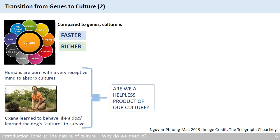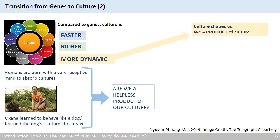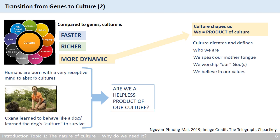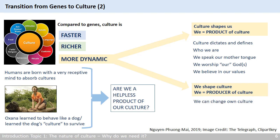Now, does that mean we are always the helpless product of our culture? Does that mean culture dictates and defines who we are, and we can actually do nothing about it? The answer is, fortunately, no. Culture is not only faster and richer than genes — it is also more dynamic. It is correct that we are, to a certain extent, the product of culture. It shapes us, it dictates and defines who we are. For example, we would speak our mother tongue, worship our gods, and believe in our specific values. But we are not helpless products of our culture. We can shape culture and be a producer. AMSIB, for example, is a business school that actively promotes a culture of sustainability.